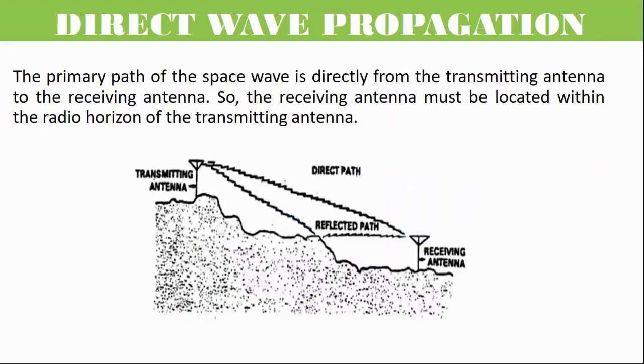The primary path of the space wave is directly from the transmitting antenna to the receiving antenna. So, the receiving antenna must be located within the radio horizon of the transmitting antenna. Radio horizon is also called line-of-sight communication.